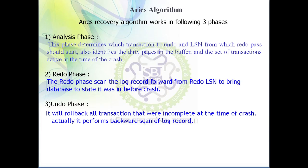During the undo phase we perform actions in the backward direction — the log is scanned in reverse and it cancels all operations for transactions that were not complete, meaning partially committed or partially executed at the time of failure. At the time of failure there may be transactions that have not completed execution but were only partially executed. In that case we perform the undo operation to cancel those partial operations performed by the transaction.